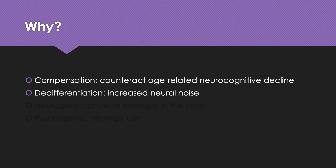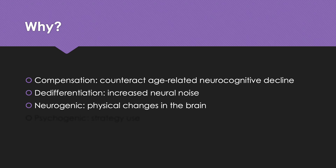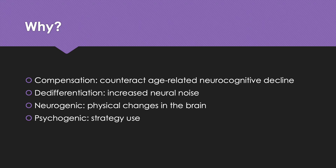Two other related views: one is that the changes are neurogenic, meaning due to actual physical changes in the brain, which tends to hold up. Another view says it has to do with strategy use — if younger and older adults are using qualitatively different methods to achieve their goals, it would make sense that different areas are activated. But when you control for strategy use — telling both groups to do the same thing — you still find these results, which suggests it's neurogenic, tied to actual physical changes in the brain.